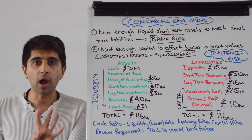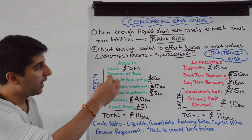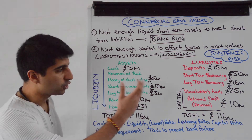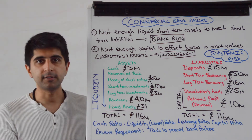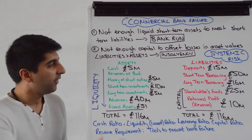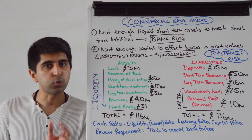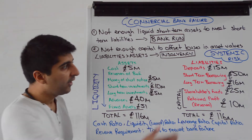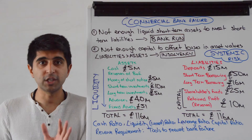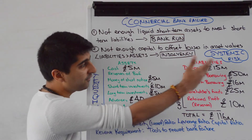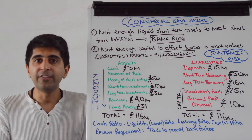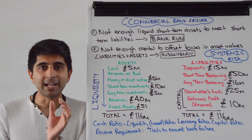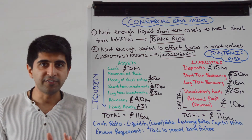They've only got 20 million pounds worth. The four current assets or short-term assets are cash, reserves at the Bank of England, money at short notice, and short-term investments. This commercial bank currently has only 20 million pounds worth of these short-term assets. They've got 65 million pounds of short-term liabilities to pay, which if they had to pay those off right now, they can't do it. There will be a run on the bank, there will be a liquidity crisis — the bank would fail.